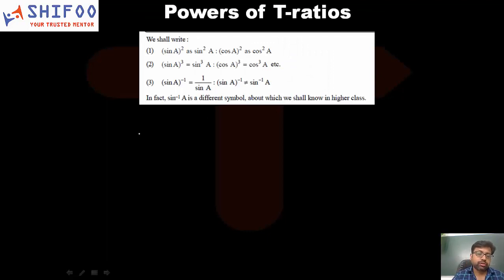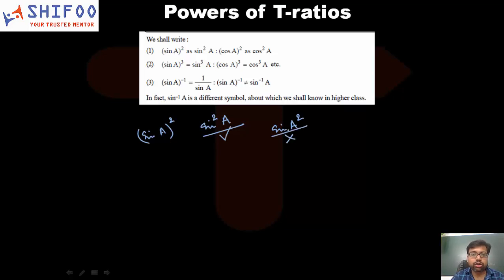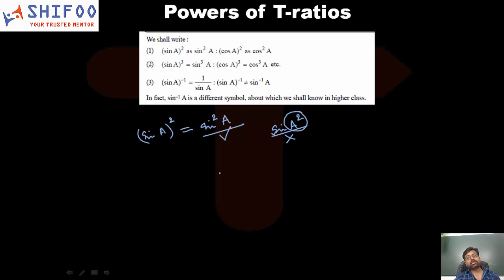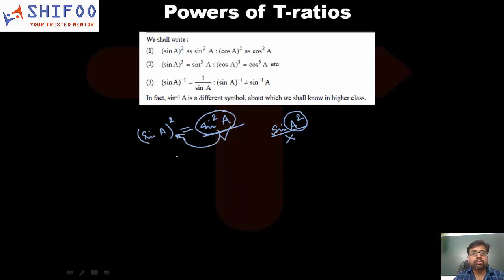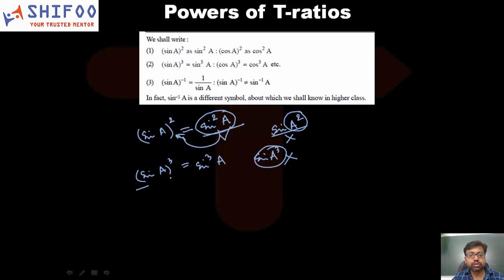Now, regarding powers of trigonometric ratios: when you square sin A, you write it as sin²A — with the 2 as a superscript between 'sin' and 'A'. You do not write it as sin(A²), because that would mean finding the sine of A squared, which is a completely different operation. Similarly, sin cubed A is written as sin³A, not sin(A³).